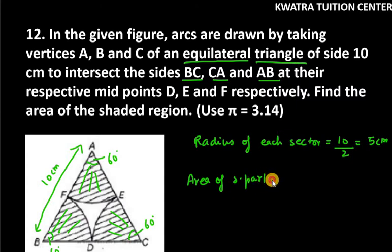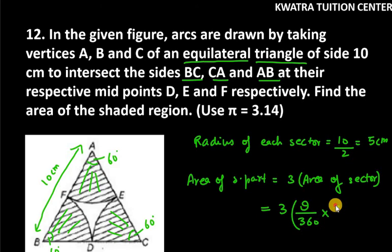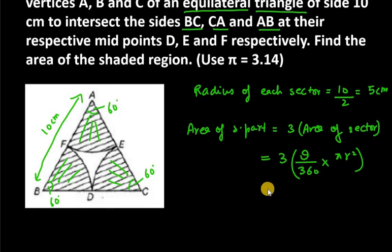Area of shaded part is equal to thrice of area of sector. Now this will be 3 into area of sector. Area of sector is theta over 360 into pi r squared. Now we have to put all the values, we need to put the value of pi, we need to put the value of r and all that.